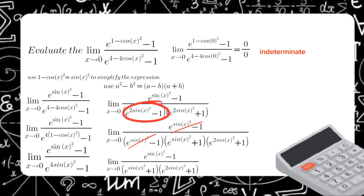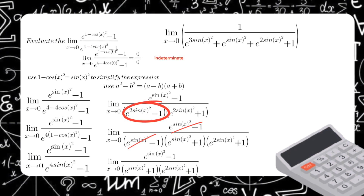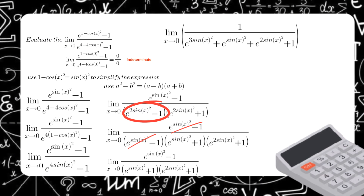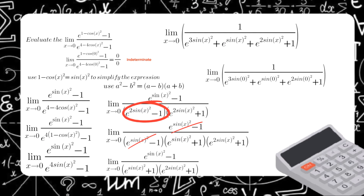We use a calculator to simplify the remaining expression in the denominator. Then substituting x = 0 into the simplified expression gives us the final answer of one-fourth. So the final answer of this example is 1/4.